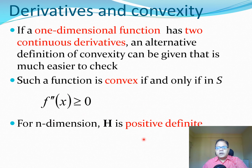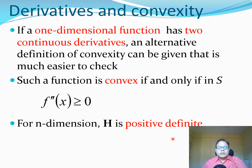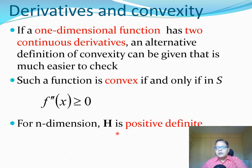Similarly, you can check a multidimensional problem by verifying that the Hessian matrix is positive definite — this is a direct extension of the one-dimensional second derivative test. For a quadratic form, the Hessian matrix is constant and you can find it directly. However, if the Hessian matrix is expressed as a function of the design variable vector x, its positive definiteness may change from point to point, which is why it can be difficult to prove convexity in nonlinear problems.